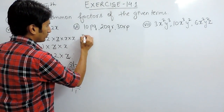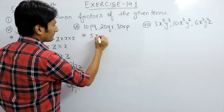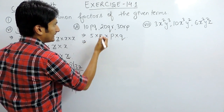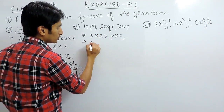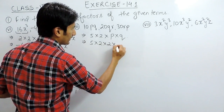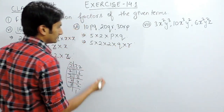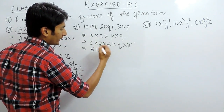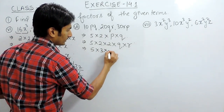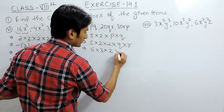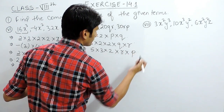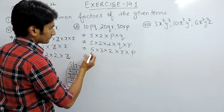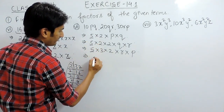Now let's find the common factors for the next part. 10pq can be written as 5 × 2 × p × q. Similarly, 20qr is 5 × 2 × 2 × q × r. And 30rp is 5 × 2 × 3 × r × p. Now looking for common factors: 5, 5, 5 — so 5 is common.